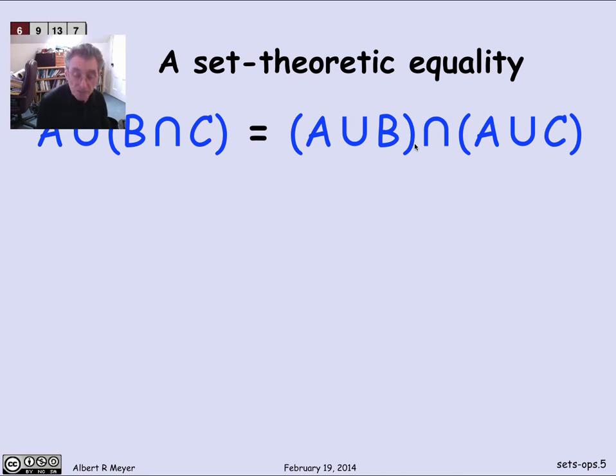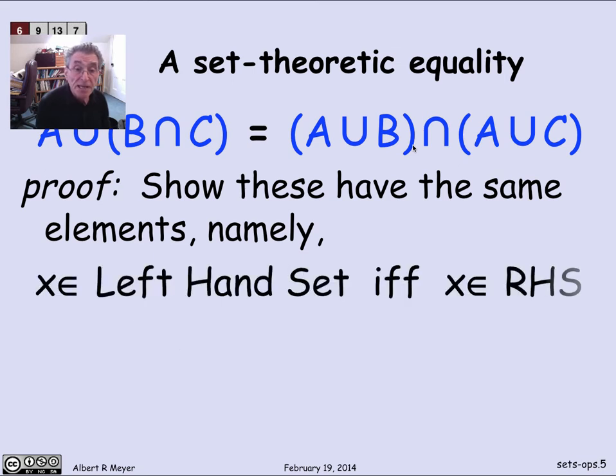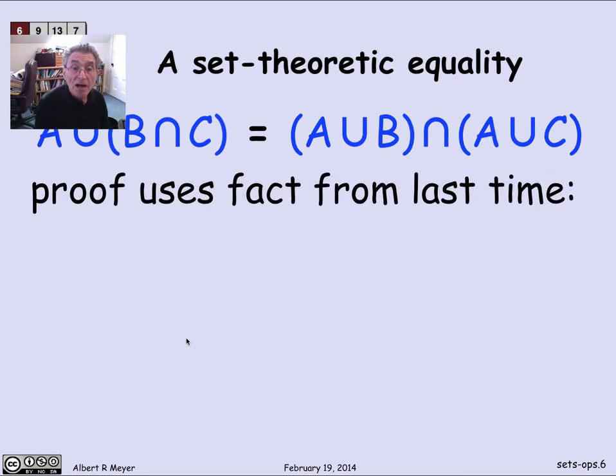How shall we prove it? Just from the definitions. Well, the way we're going to do it is by showing that the two sets on the left-hand side and the right-hand side have the same set of elements. Namely, if I have an element x that appears in the set described on the left-hand side, then that point is on the right-hand side. And it's an if and only if. So that says that the left-hand side and the right-hand side expressions define sets with the same set of points. This holds for all x.